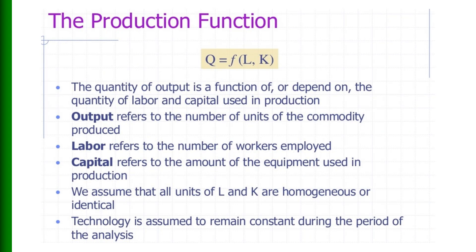Output refers to the number of units of the commodity produced. Labor refers to the number of workers employed. Capital refers to the amount of equipment used in production. We assume that all units of labor and capital are homogeneous as well as identical. Technology is assumed to remain constant during the period of analysis.